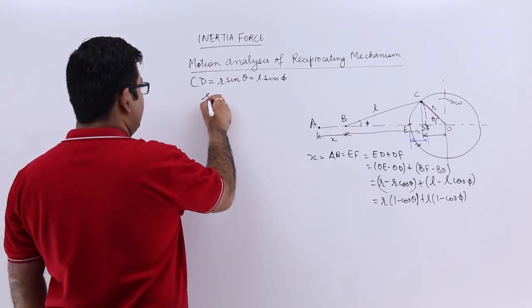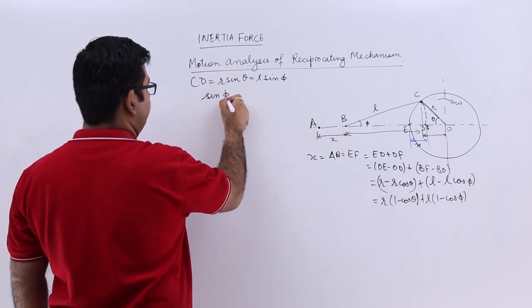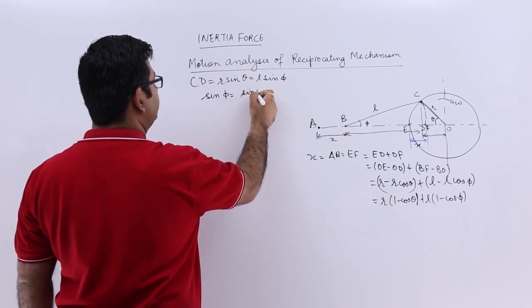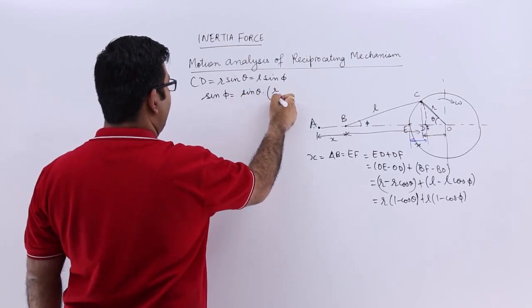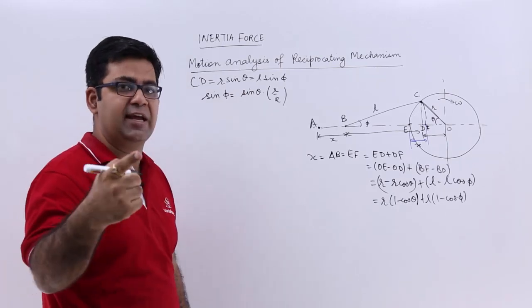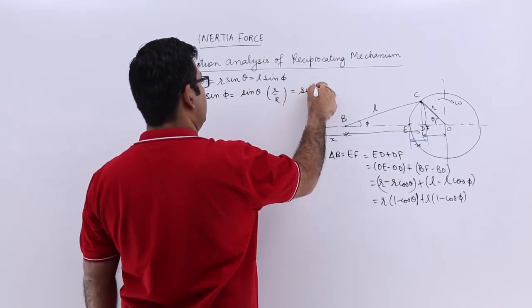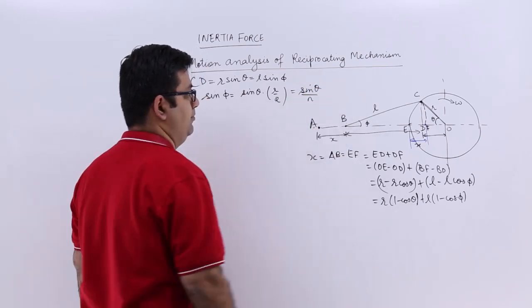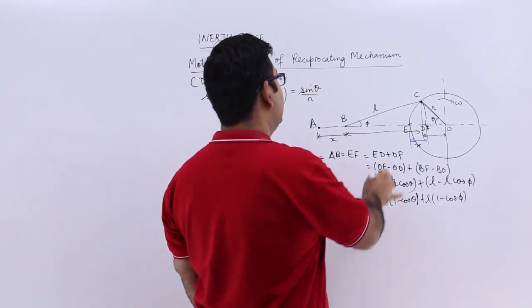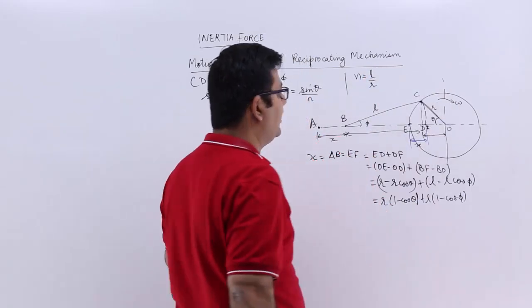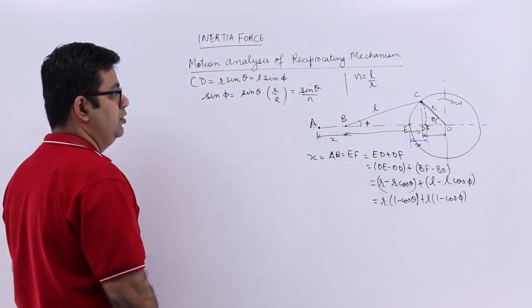Now the value of sin phi will be equal to sin theta into R by L. Now what is L by R? It is N. So this becomes 1 by N. This will be sin theta upon N. Where N is the ratio between the length of connecting rod and the crank radius.